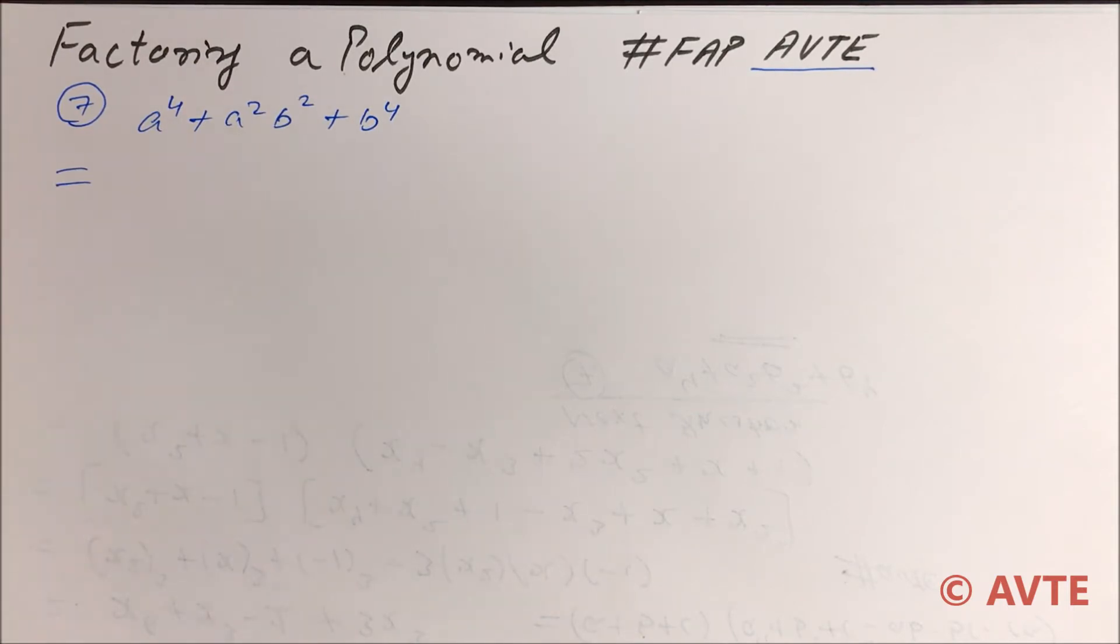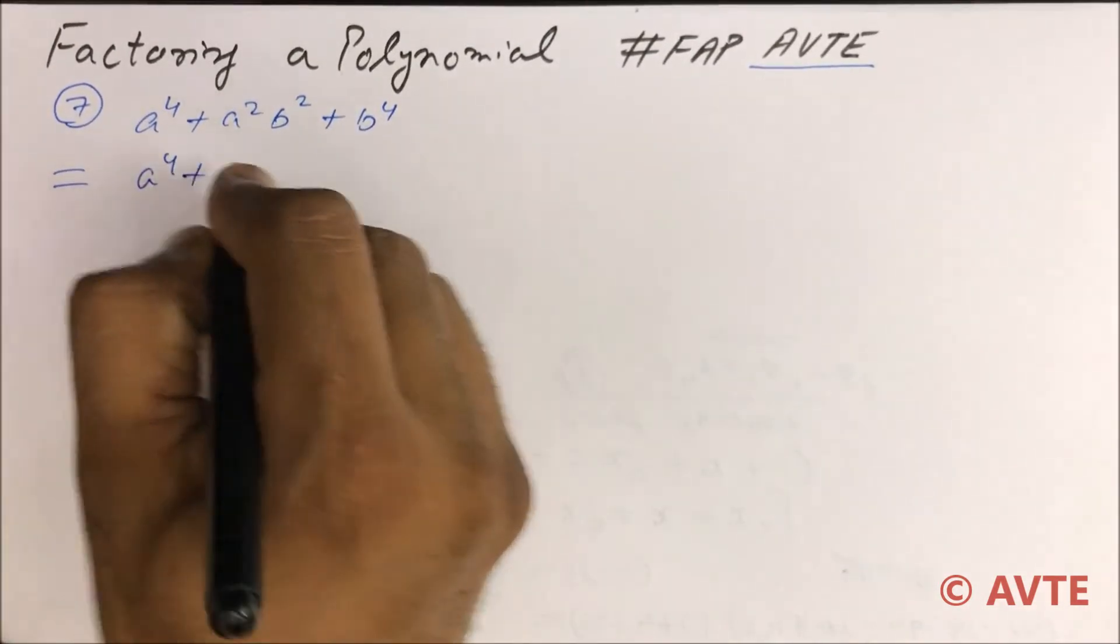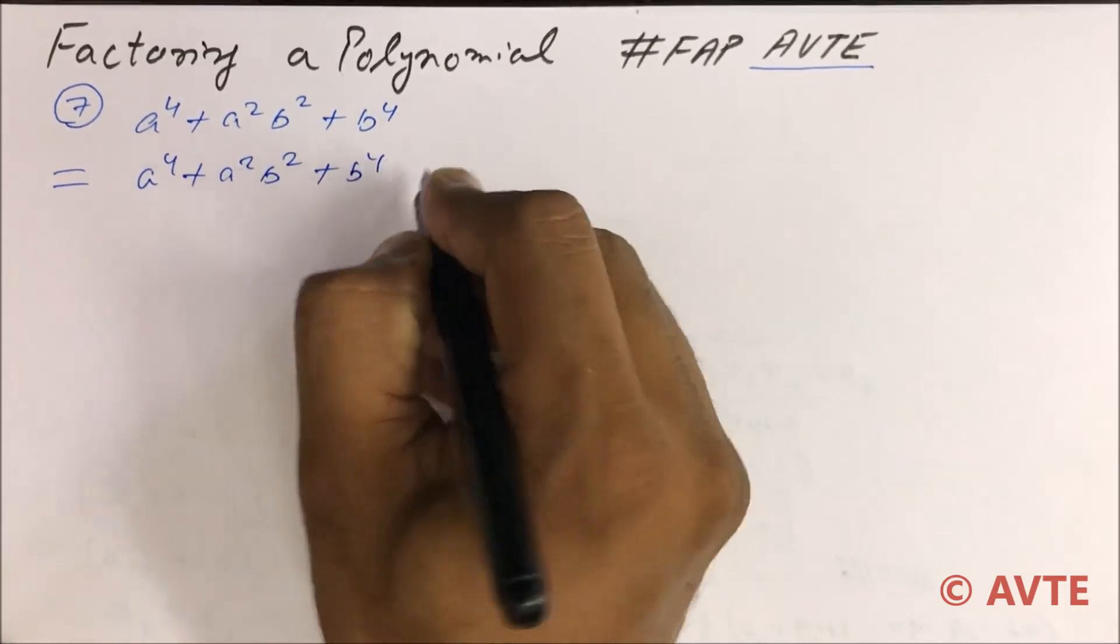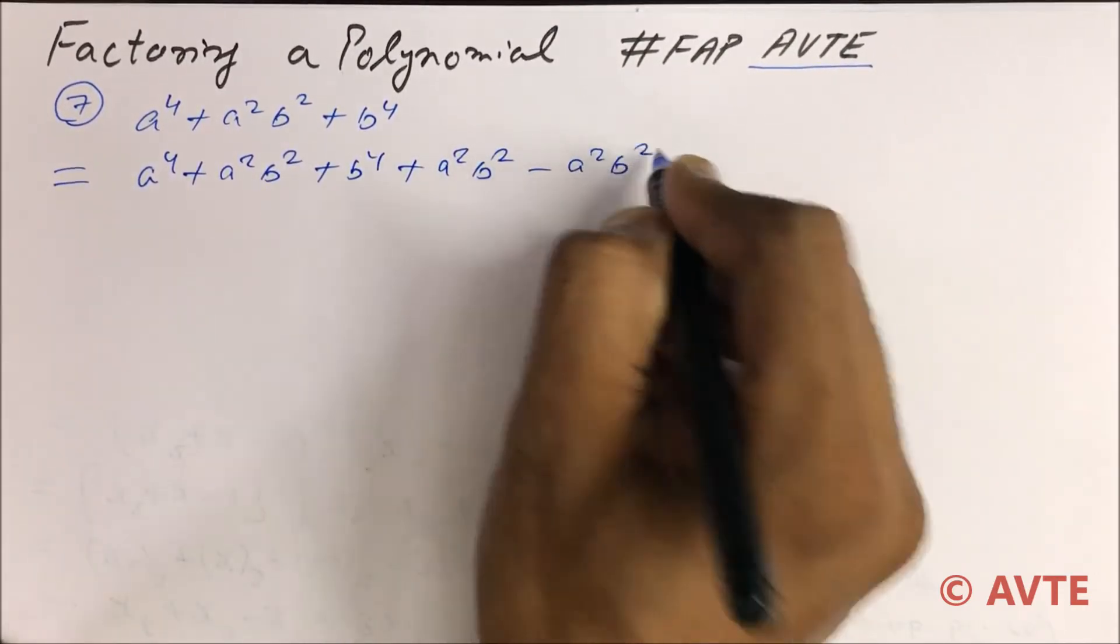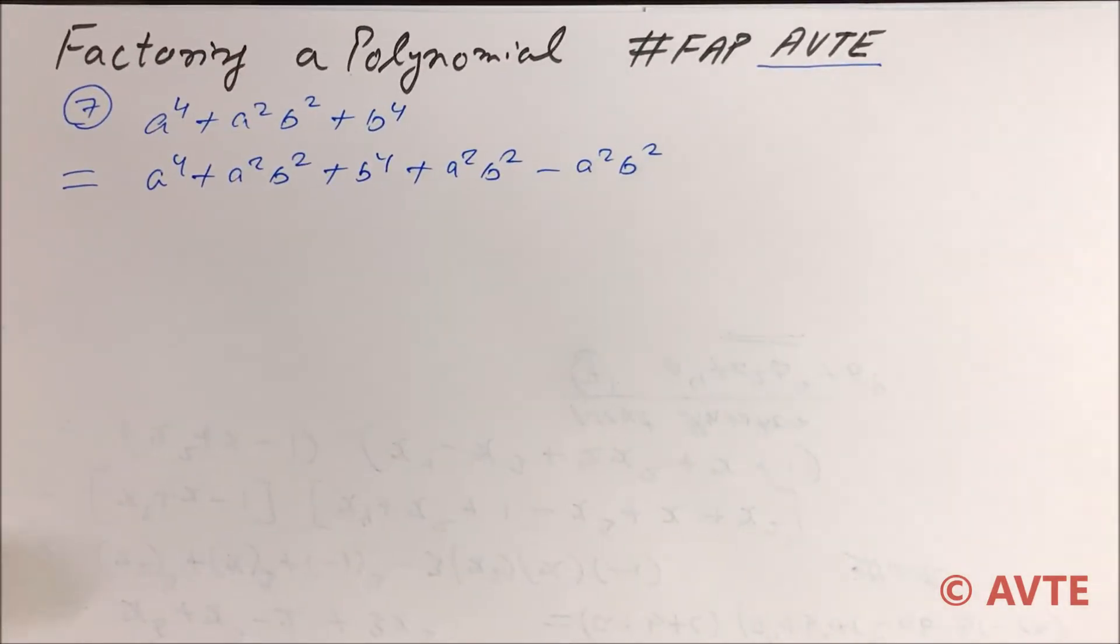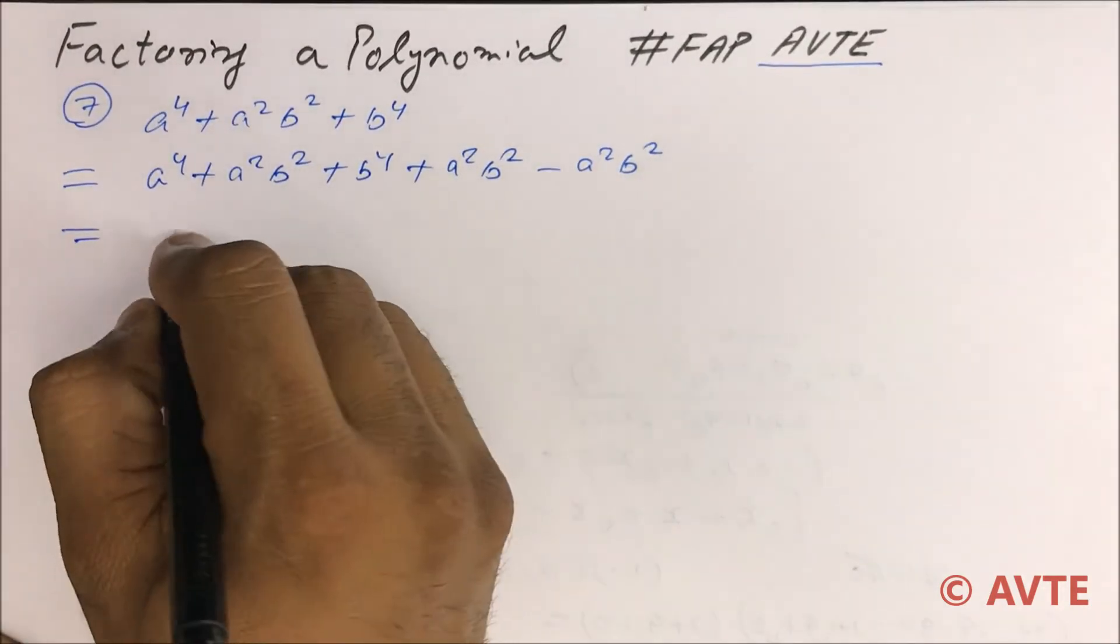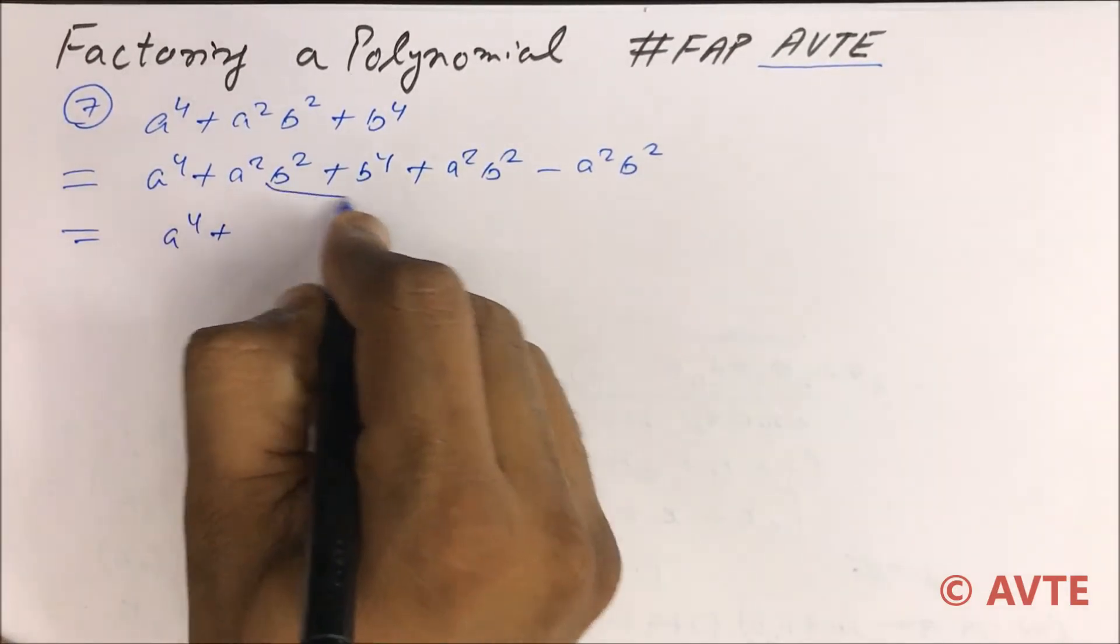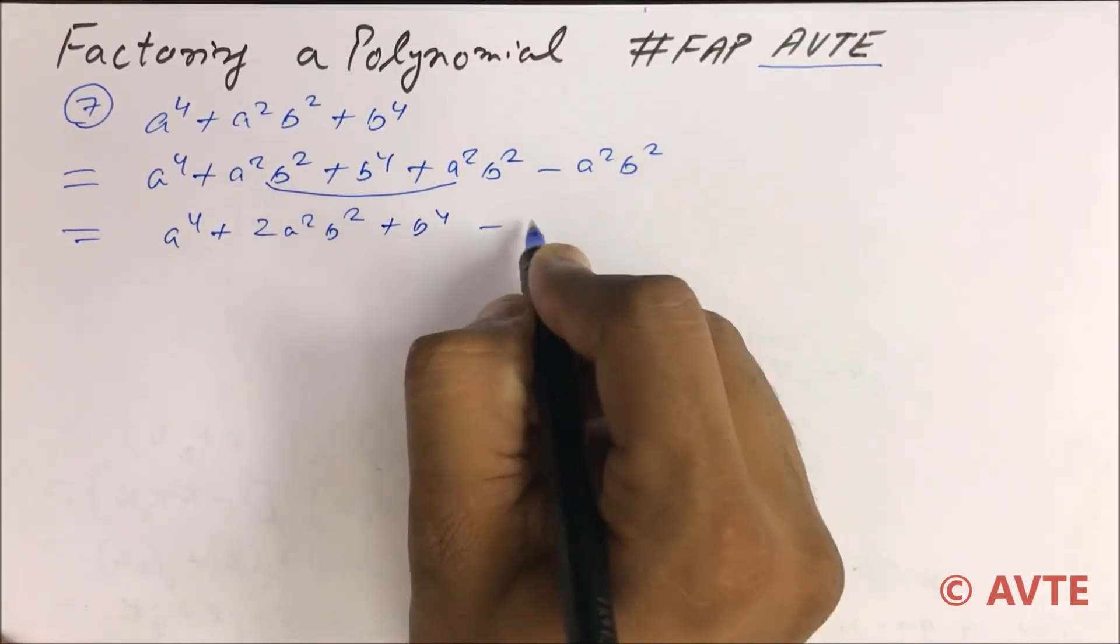So here you go: you add a square b square and subtract a square b square. I know that now you guys are all expert to do these kinds of questions, so just go fast. a raised to power 4 plus 2a square b square plus b raised to power 4 minus a square b square.